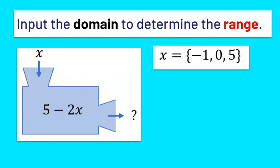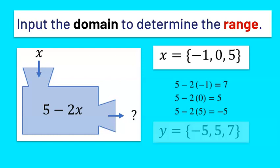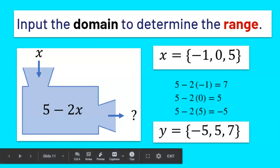Let's try finding the range with the given domain. Often you're told the domain — the x values are the elements of the domain. Take each value and plug it into the function one at a time: replace x with negative 1, then 0, then 5. When you replace with negative 1, you get positive 7. When you replace with 0, you get 5. When you replace x with 5, you get negative 5. So the range is the numbers negative 5, 5, and 7 listed in order.